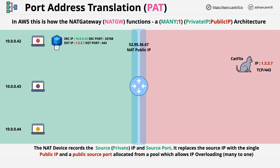This packet is routed through the NAT device on its way to the internet. In transit, the NAT device records the source IP and the original source private port, and it allocates a new public source port. It records this information inside a NAT table, and it translates the packet so that its source IP address is the single public address the NAT device uses, and the source port is the newly allocated source port. This adjusted packet is then forwarded on to CatFlix.